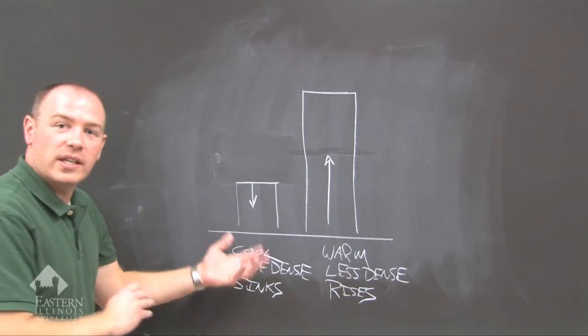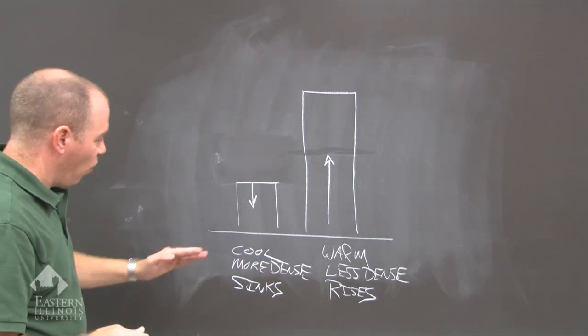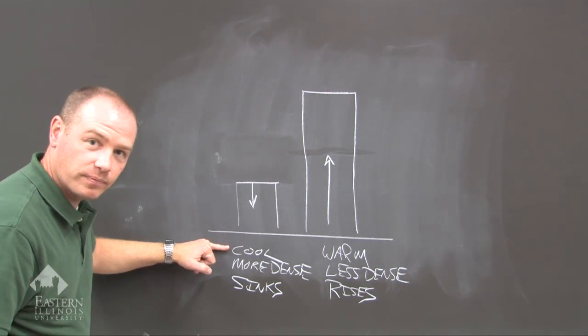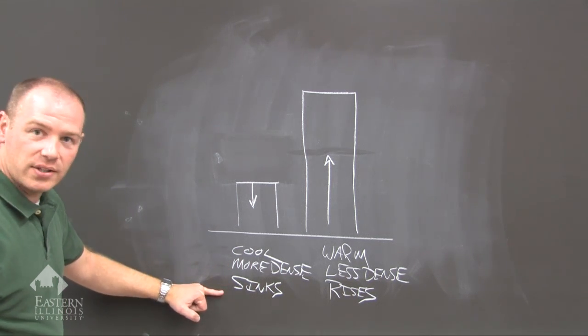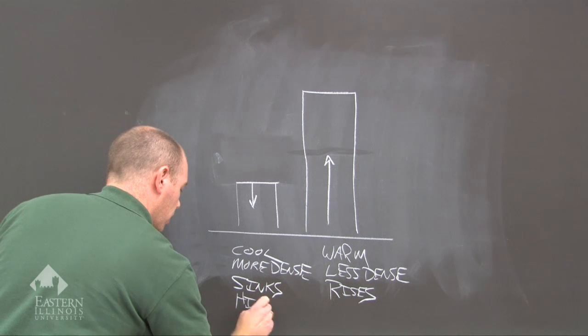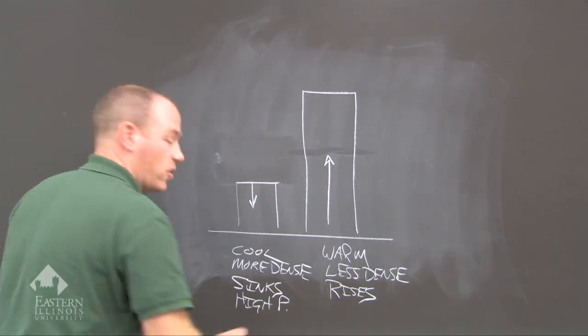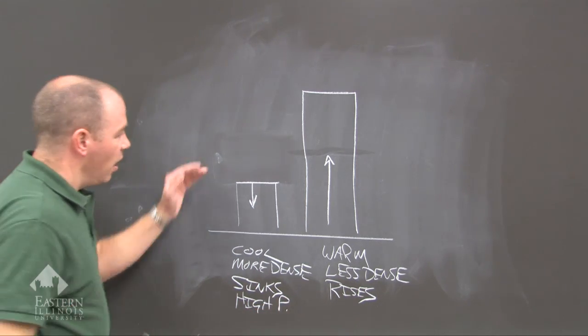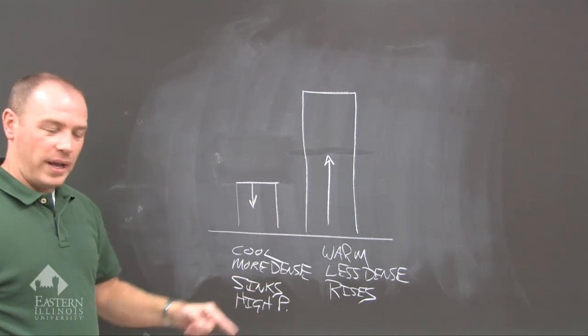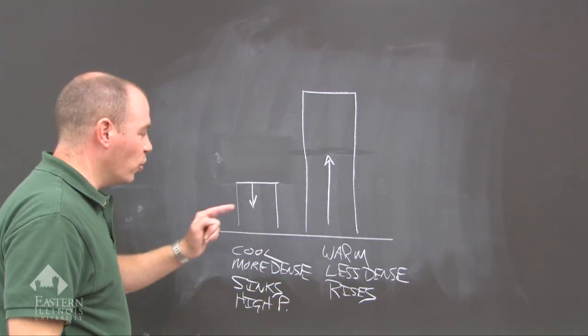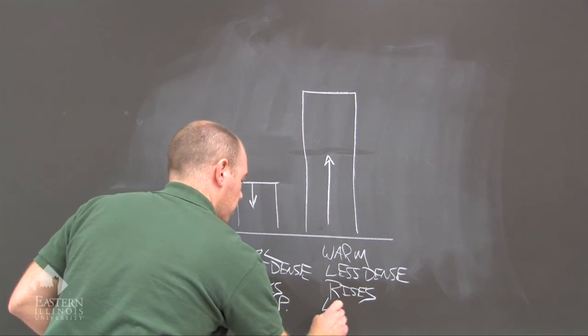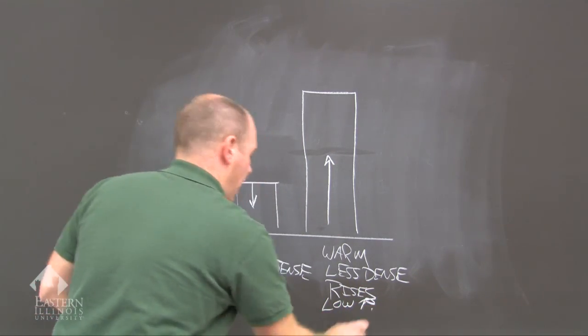So what is the pressure associated here? Well, we get cool air, more dense, it weighs more and sinks. We create a high pressure at the surface. On the other hand, you have warm air that is less dense and rises. You create a low pressure at the surface.